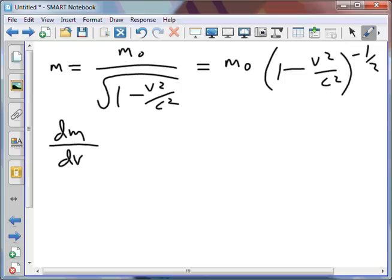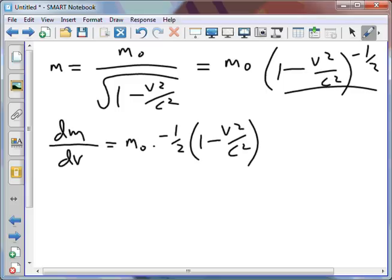And I'll use the chain rule to try to differentiate this. So that'll become a constant there, rest mass. Now differentiating the brackets, I end up with negative one half times 1 minus v squared on c squared to the negative three on two. And I'll differentiate inside the brackets to give me negative 2v on c squared.